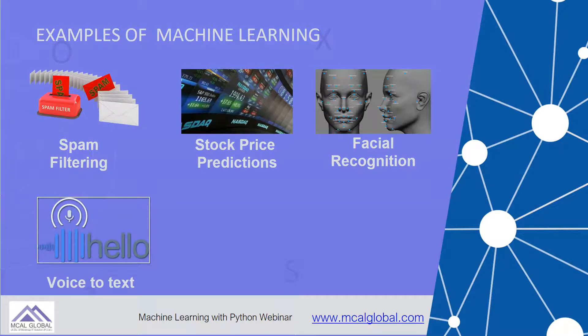Android and iOS phones these days have a voice-to-text feature, and it's powered by machine learning. Law bots in the US have analyzed all the legal dispositions given thus far,